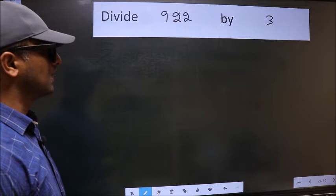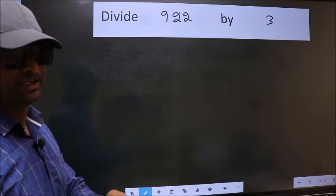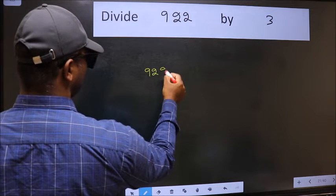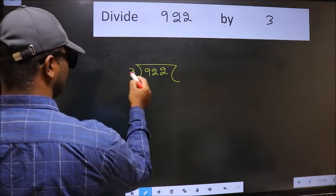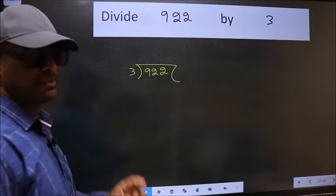Divide 9.22 by 3. To do this division, we should frame it in this way. 9.22 and 3 here. This is your step 1.